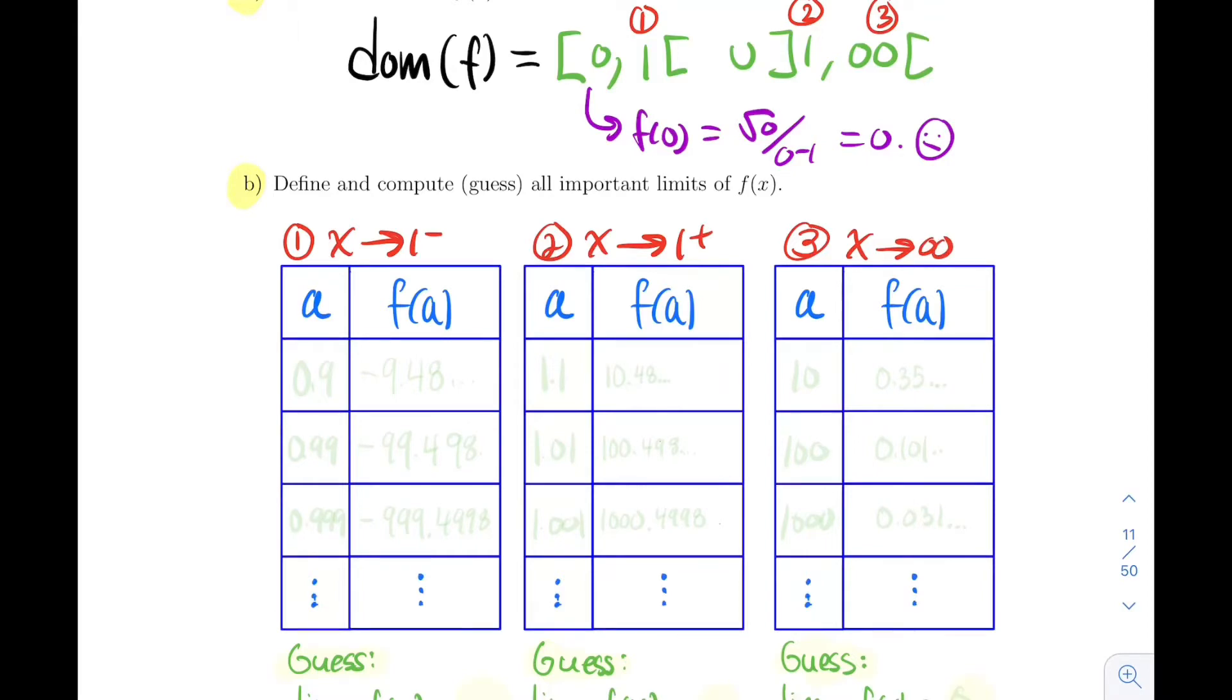You need to construct your own tables. Left side of 1, 0.9, I'm just subtracting by 0.1 here, then by 0.01 so 0.99 and 0.999. For greater than 1 I'll just step by 0.1, so get 1.1, 1.01, 1.001. Going to infinity, my classic 10, 100, and 1000.